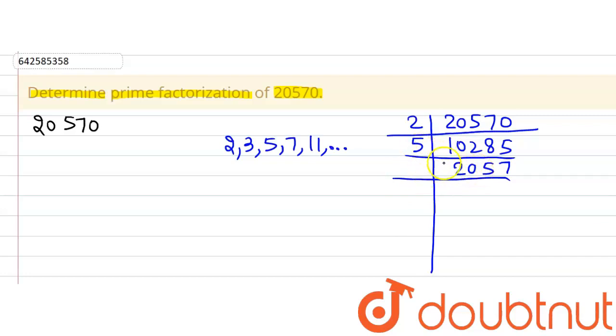2,057 is no further divisible by 5 so we will move to the next prime number that is 7. 2,057 is also not divisible by 7 so we will move to the next prime number that is 11. Dividing 2,057 by 11 we will get 187.